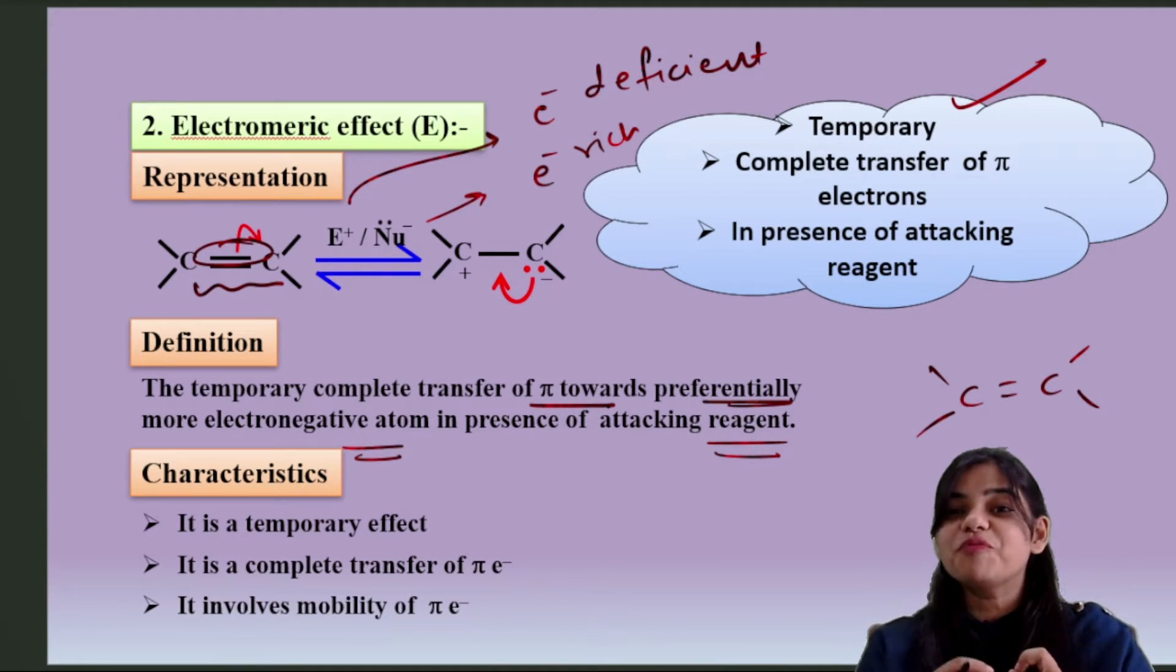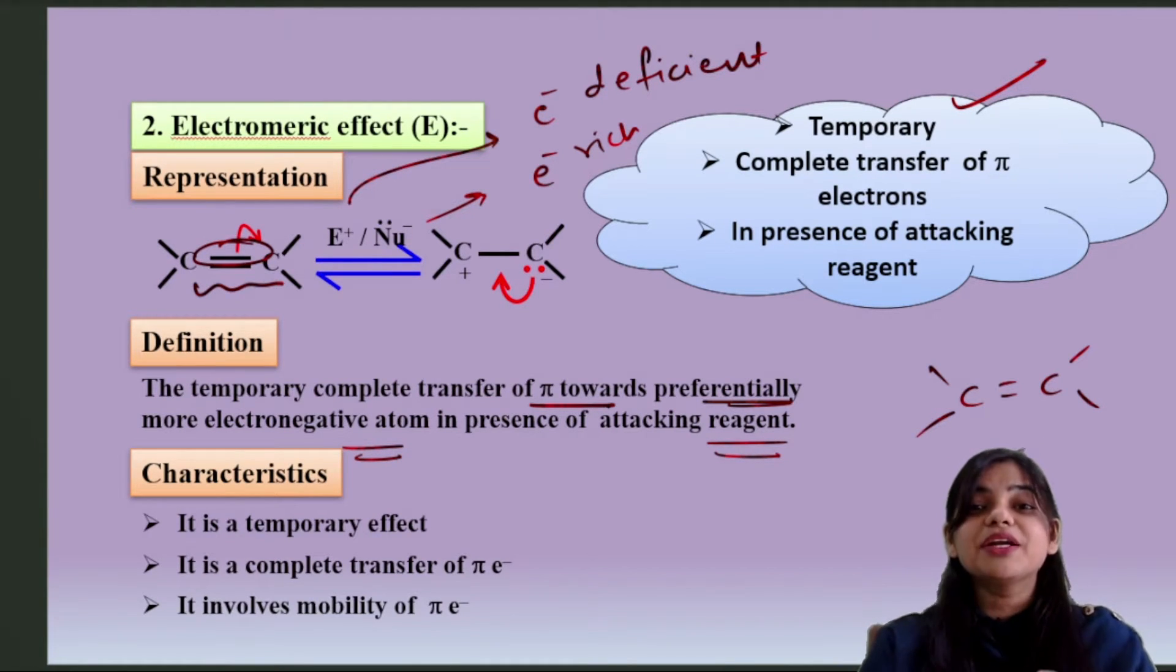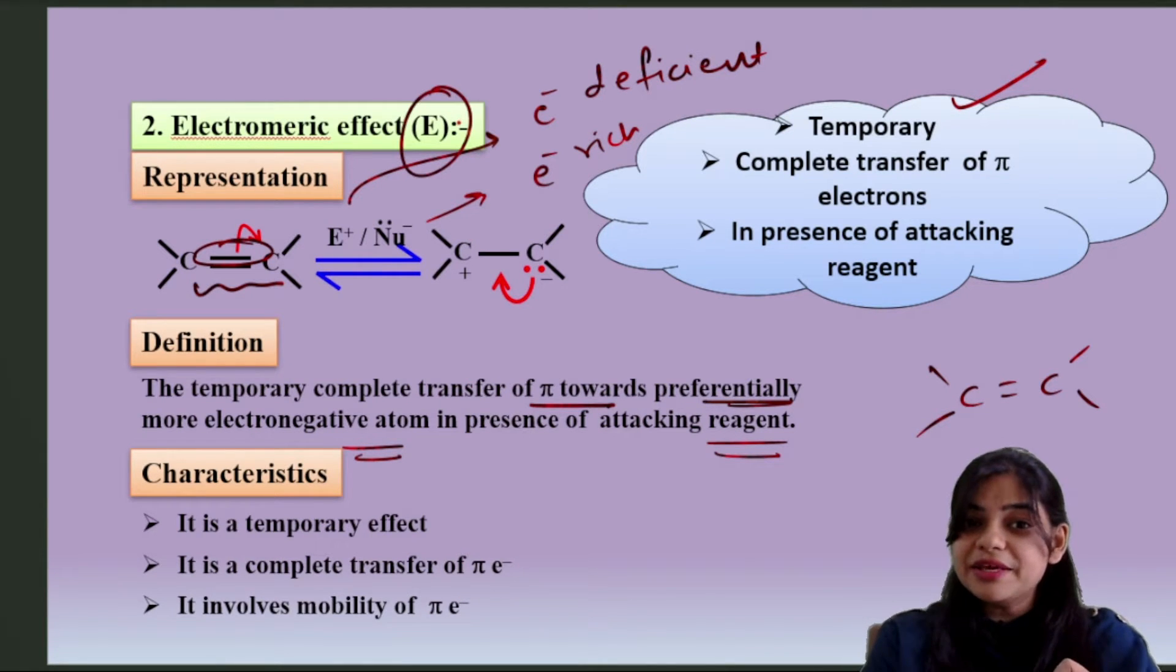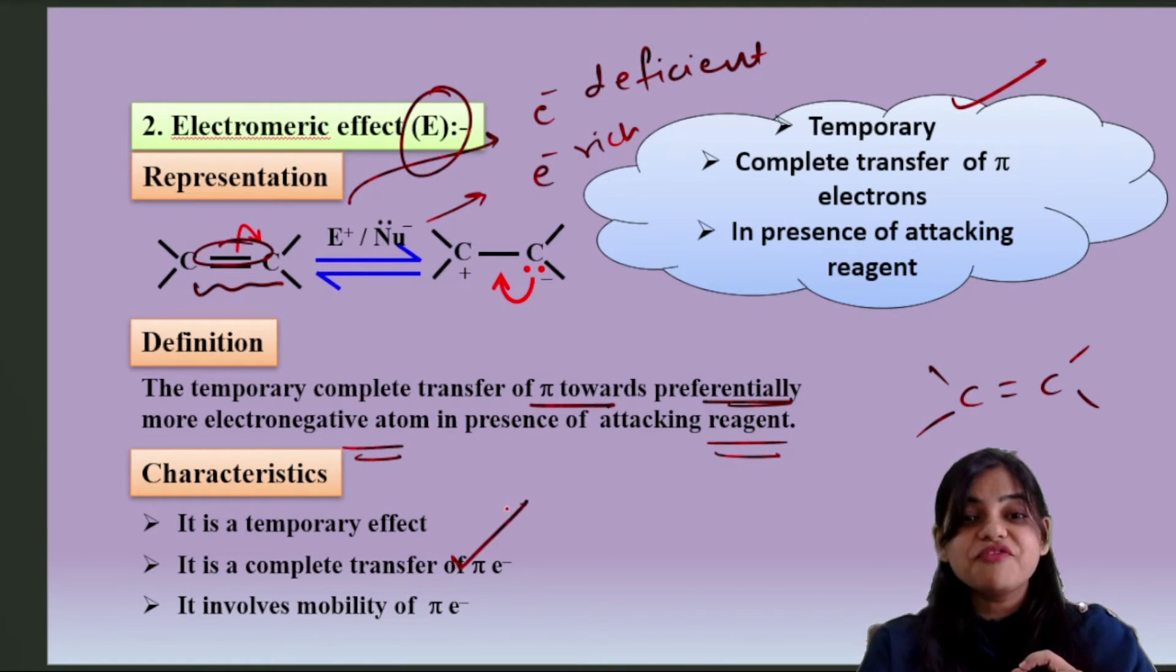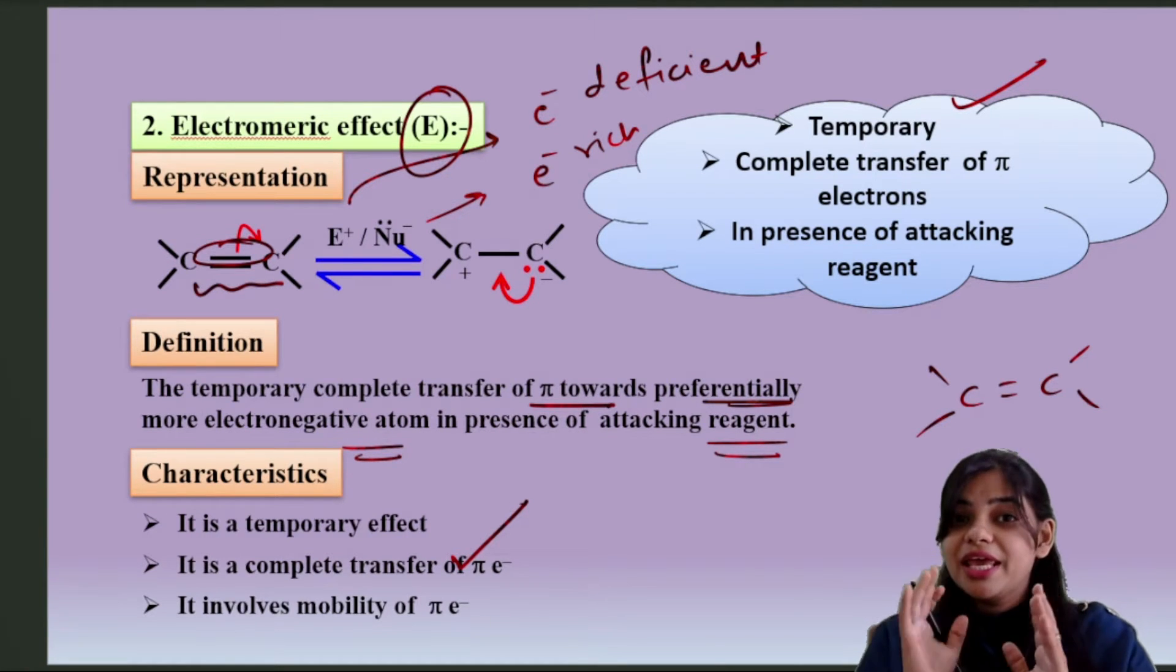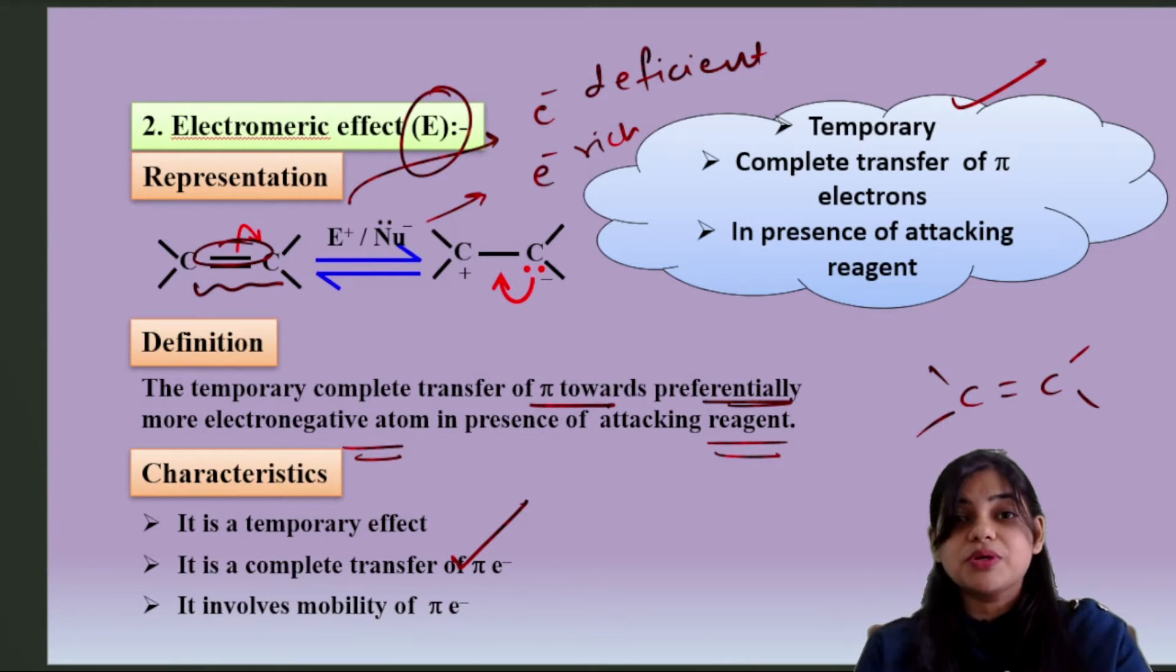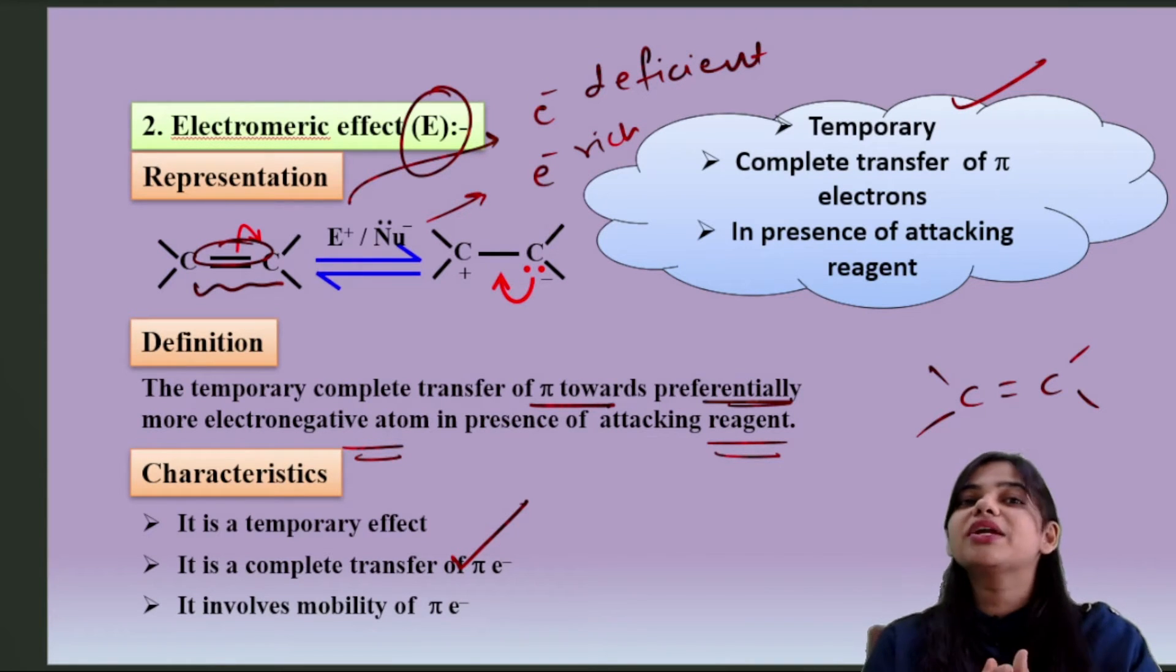Is there partial pulling of electrons or complete transfer of electrons? Yes, there is complete transfer of pi electron. And when does it happen? Only if some electrophile or nucleophile attacks. So what are the characteristics of electromeric effect? It is denoted by capital E. It is a temporary effect and there is a complete transfer of pi electron. The more electronegative element, if there is a possibility, will get both electrons and the other one will get a complete positive charge.